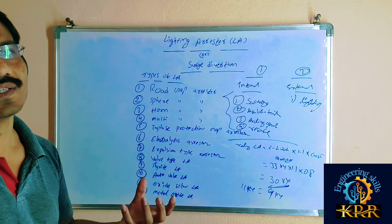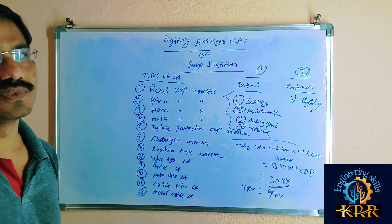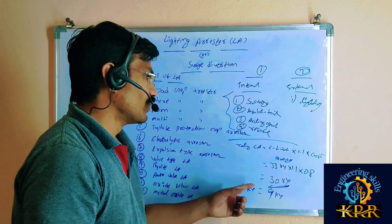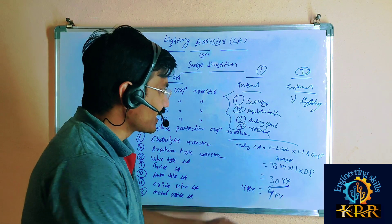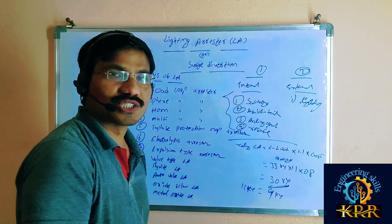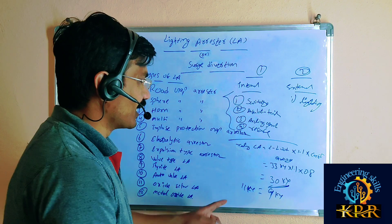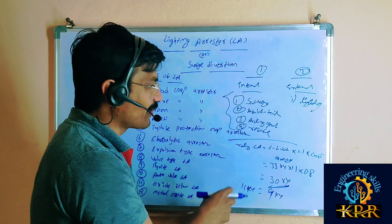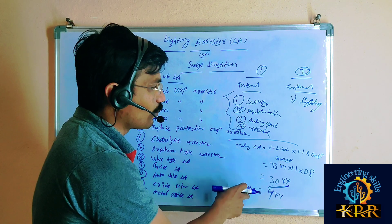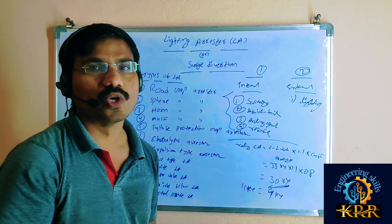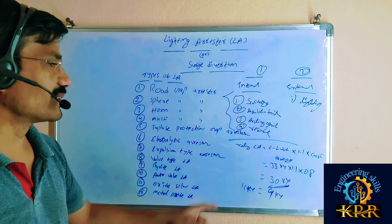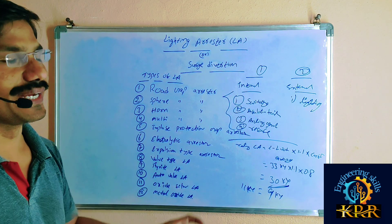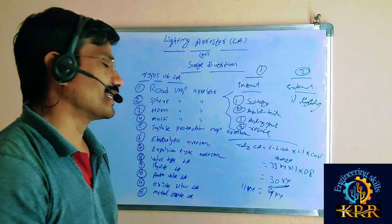How to calculate the flashover voltage: the power frequency flashover voltage is equal to 1.5 times the lightning arrestor rating.